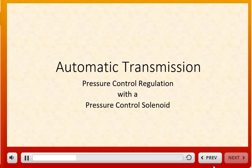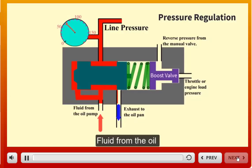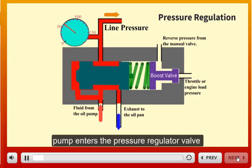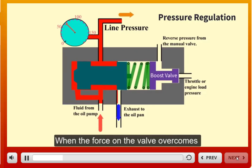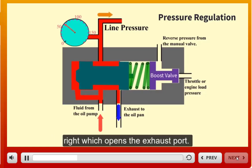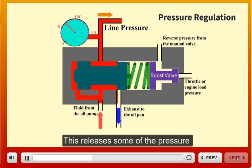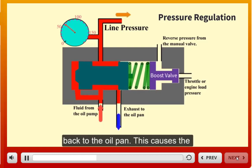Flow from the oil pump enters the pressure regulator valve and applies pressure against the spring. When the force on the valve overcomes the spring force, the valve moves to the right, which opens the exhaust port. This releases some of the pressure back to the oil pan.